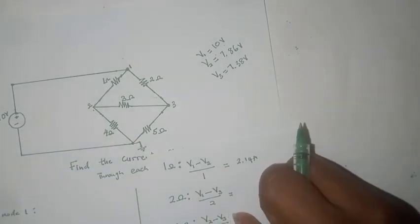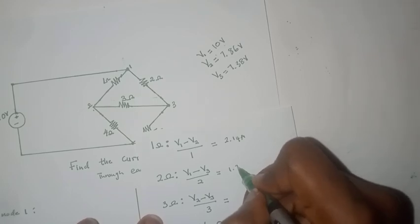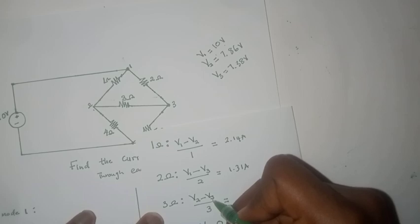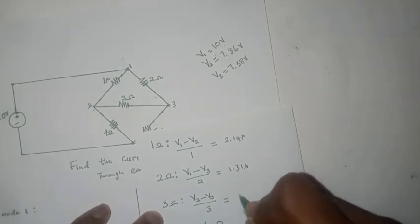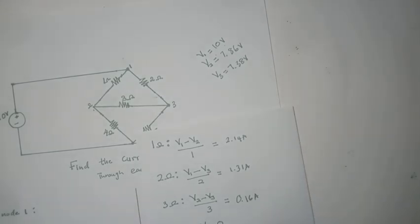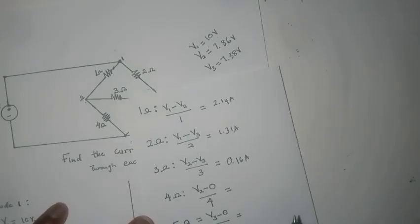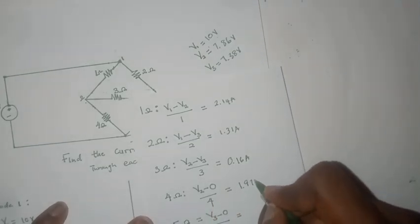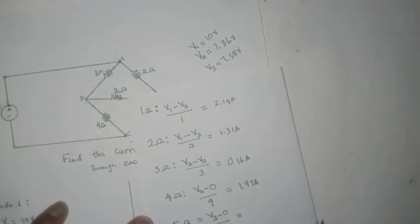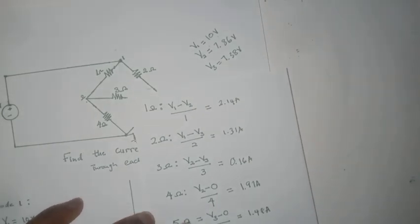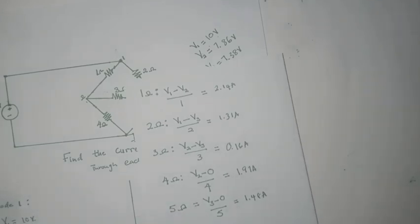Then we say V1 minus V3 divided by 2, which would give us 1.31 amperes. V2 minus V3 divided by 3 ohms, which would give us 0.16 amperes. V2 minus 0 divided by 4, which would give us 1.97 amperes. And V3 minus 0 divided by 5, which gives us 1.48 amperes.